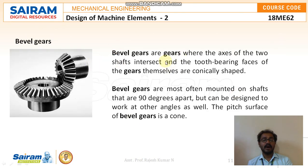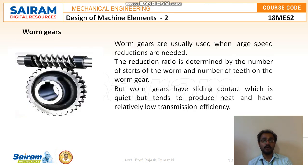Bevel gears are gears where the axes of the two shafts intersect, and the tooth-bearing faces of the gears are conically shaped. These bevel gears are most often mounted on shafts that are 90 degrees apart, but can be designed to work at other angles as well. The pitch surface of the bevel gears is a cone.